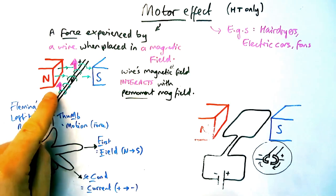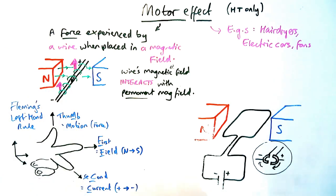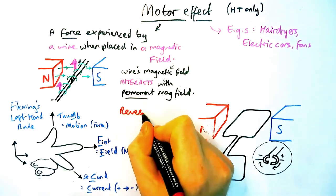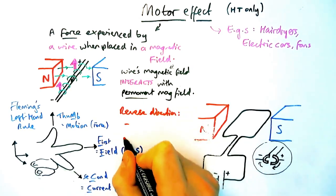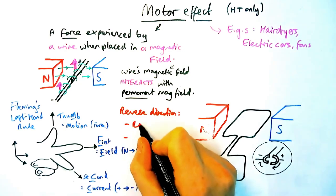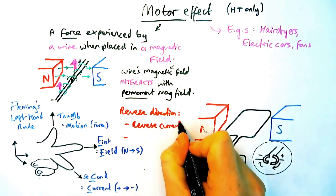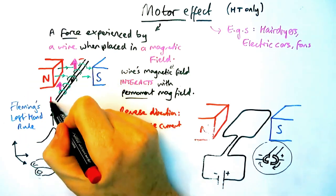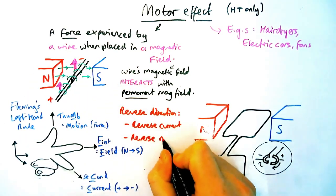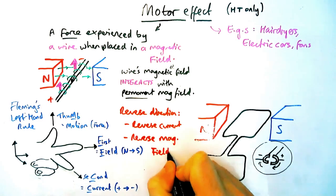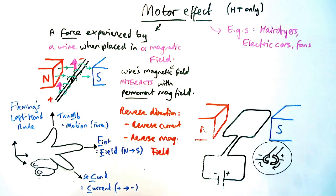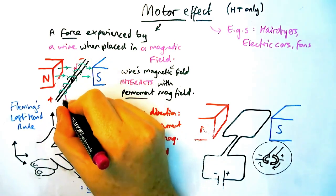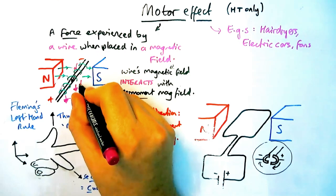If I wanted to flip the wire's direction around I would have to change one of the other two factors. For example if I wanted the wire to move down I could either flip the fields around so reverse the field direction so that the north and south poles are switched over, or I could switch the current around so it's going toward the top right of the screen instead of the bottom left. If I did either of those things then I would have the wire moving in the downwards direction instead of upwards.